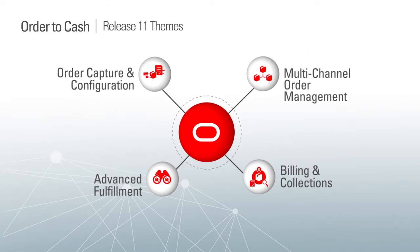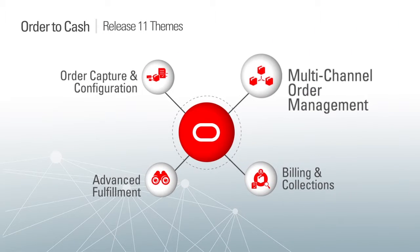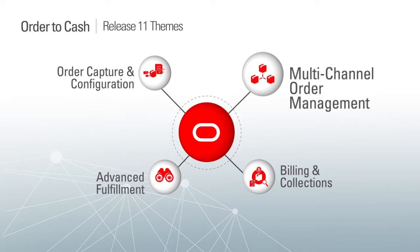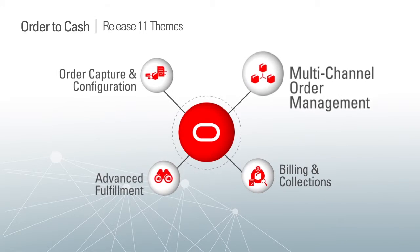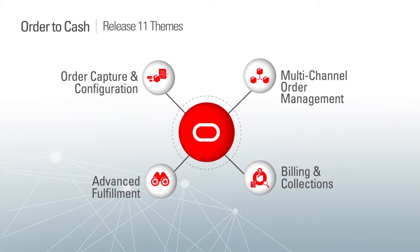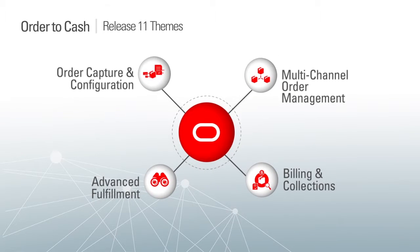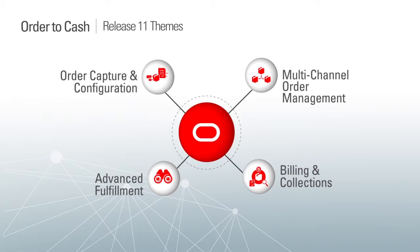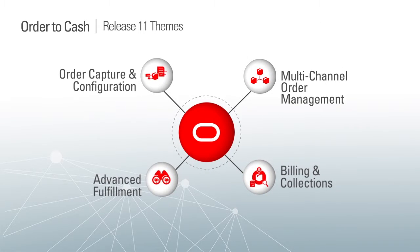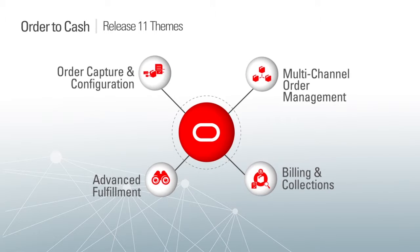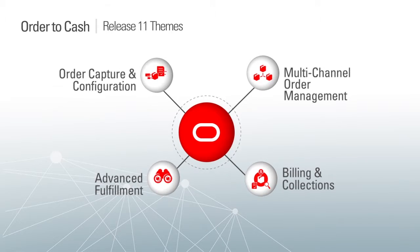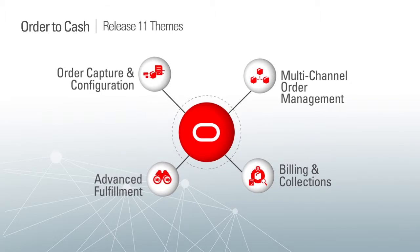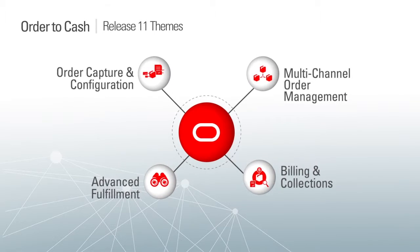For most large organizations today, one order capture channel is not enough. Indeed, order management complexity across multiple capture and fulfillment systems has created problems, including escalating supply chain costs, inaccurate promise dates and higher than needed inventory. The difficulty of managing orders efficiently and accurately is made greater by increasing globalization, M&A activity, multiple sales channels and complex supply chains.